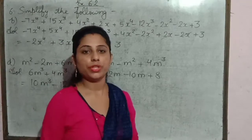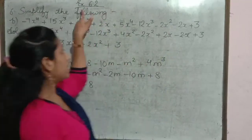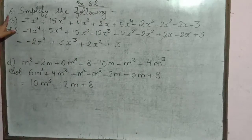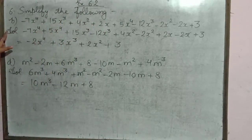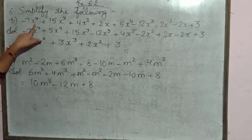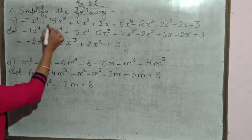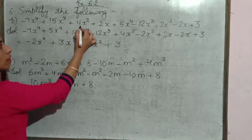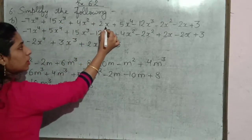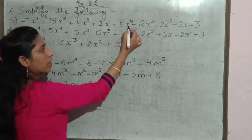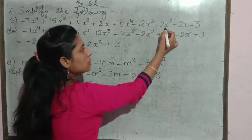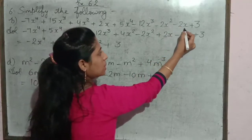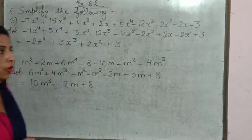Good morning students. Today we will continue Exercise 6.2 and your sixth question is to simplify the following. Solve karna hai abko. First question is: minus 7x raised to power 4 plus 15x cube plus 4x square plus 2x plus 5x raised to power 4 minus 12x cube minus 2x square minus 2x plus 3.